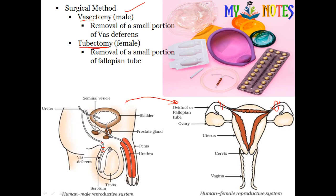These are permanent methods to avoid pregnancy. In males, vasectomy involves cutting the vas deferens; in females, tubectomy involves cutting and tying the fallopian tube.